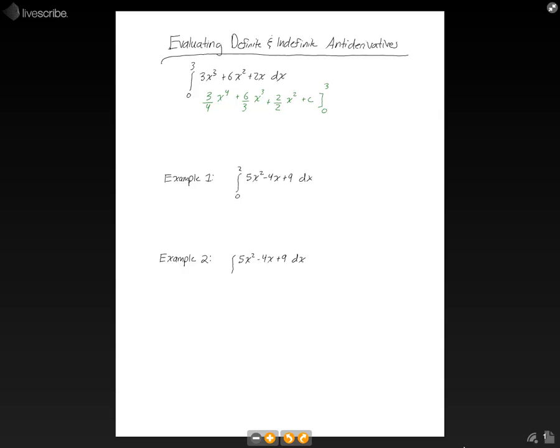So let's do that. We'll evaluate it at 3 for 3 fourths times 3 to the fourth plus 6 thirds times 3 to the third plus 2 over 2, 3 squared plus c minus evaluating at 0 now, 3 fourths times 0 to the fourth plus 6 thirds times 0 to the third plus 2 over 2, 0 squared plus c.